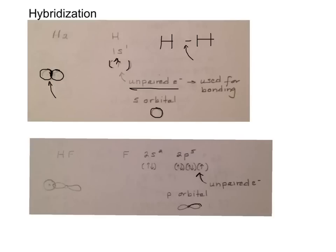And it's in a p orbital. If you remember, p orbitals are this funny sort of figure 8 shape. So if we were to look at the molecule HF, it would be H, which has an unpaired electron in an s orbital, and F, which has an unpaired electron in a p orbital.